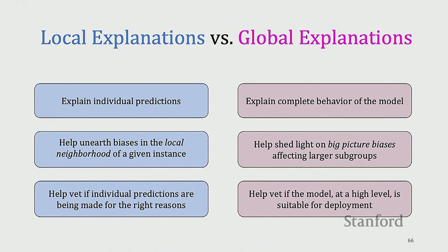These differences matter in practice. Before deploying a model in a hospital or court system, high-level authorities need to approve it. You can't give them a million local predictions and say 'use this to vet your model.' For them, the global description is very important so they can see a big-picture view of what's going on. In practice, these differences play a very significant role in enabling certain applications and practices versus others.